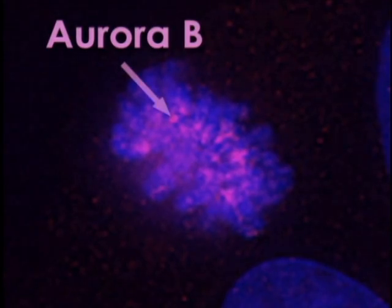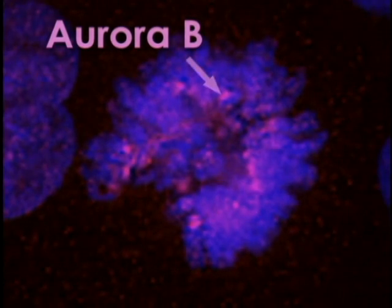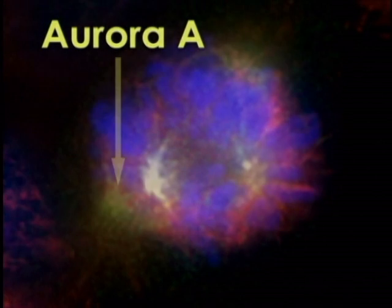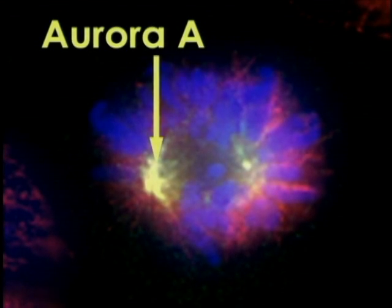Aurora kinases, seen here under fluorescence, are involved in this checkpoint function. These kinases are only expressed during mitosis. They are overexpressed in a wide range of tumors and are potentially oncogenic.